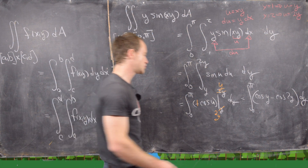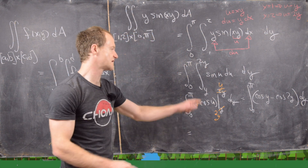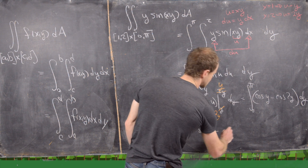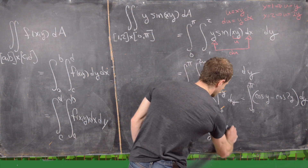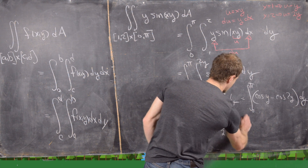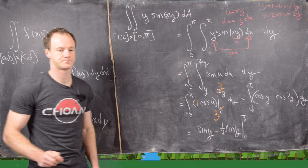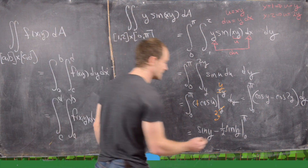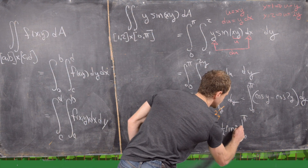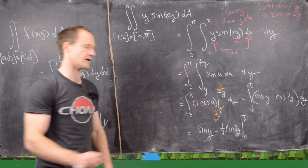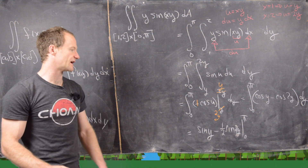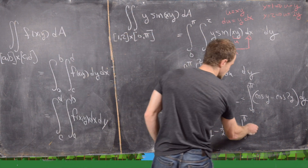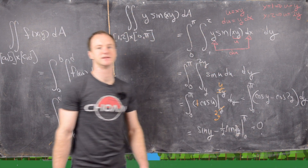Those are two easy antiderivatives: sine(y) minus one-half sine(2y), evaluated from 0 to π. Plugging in π gives 0, and plugging in 0 also gives 0. So the answer to this whole integral is 0.